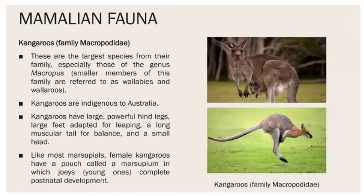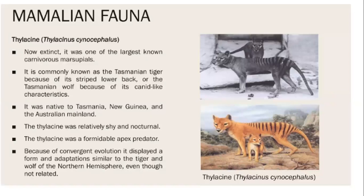The kangaroo is a marsupial and the largest species from its family, especially those of genus Macropus. Kangaroos are indigenous to Australia. They have large and powerful hind legs, large feet adapted for leaping, a long muscular tail for balancing, and a small head. Like most marsupials, female kangaroos have a pouch called a marsupium in which young ones complete post-natal development.